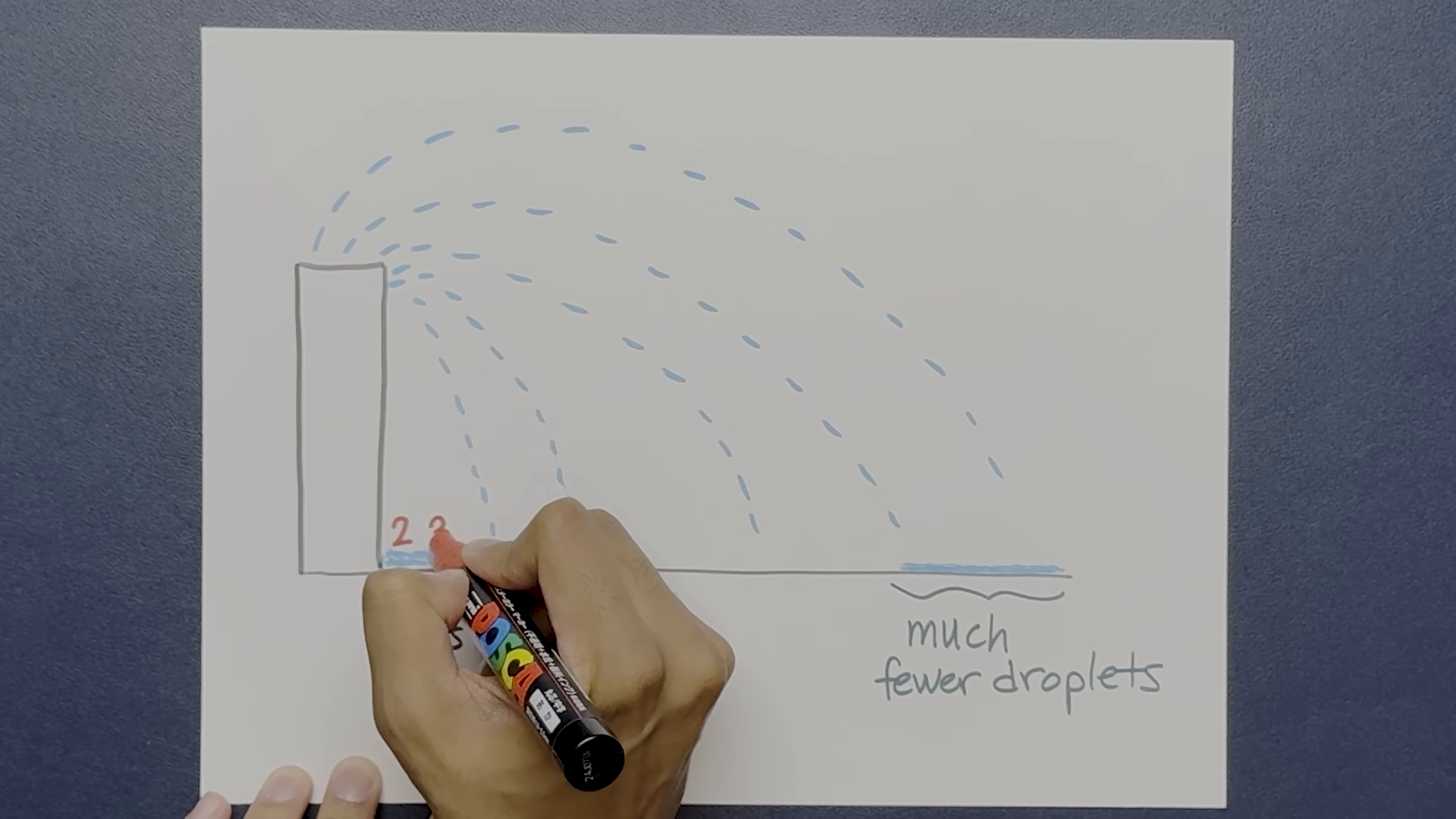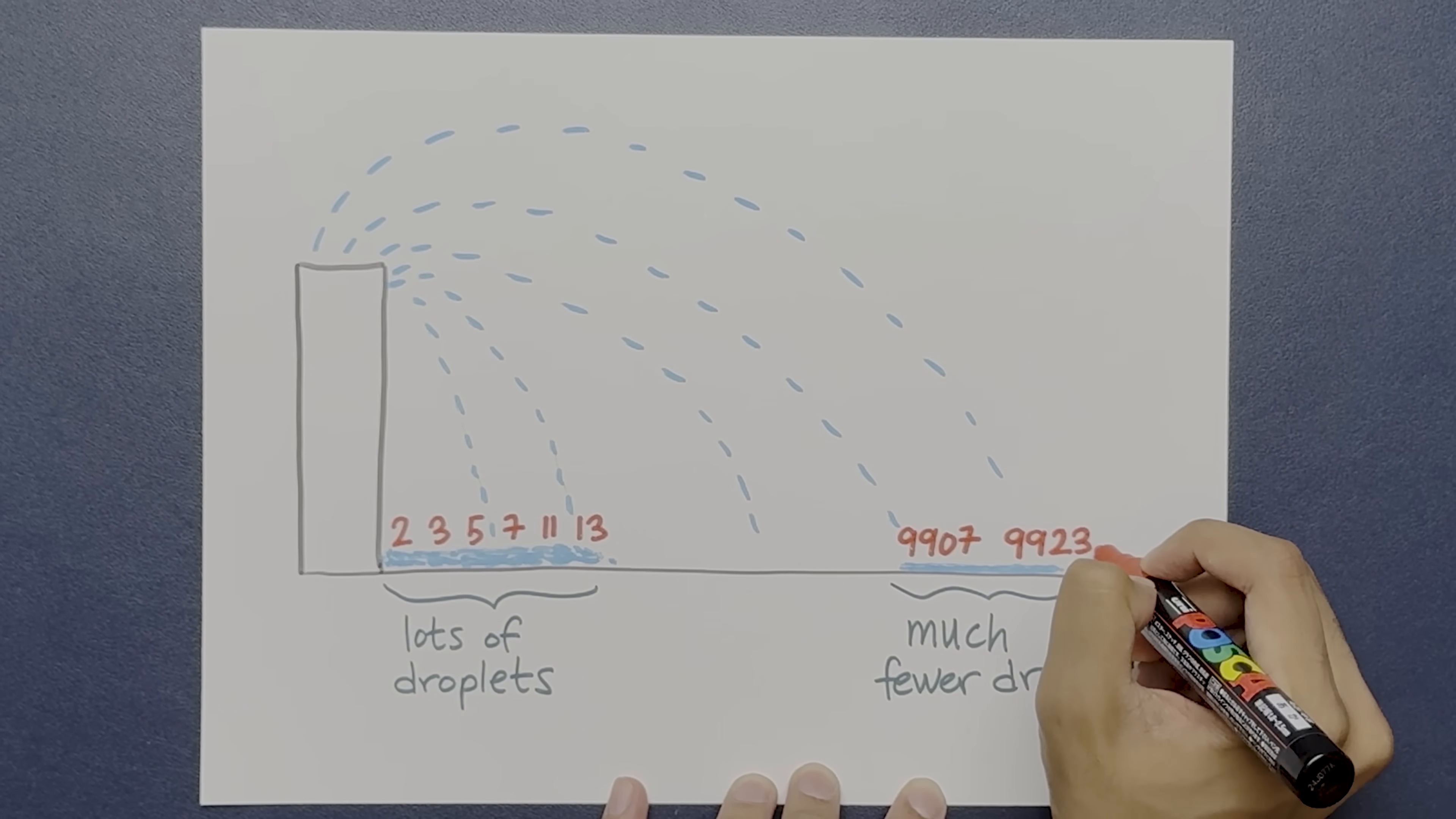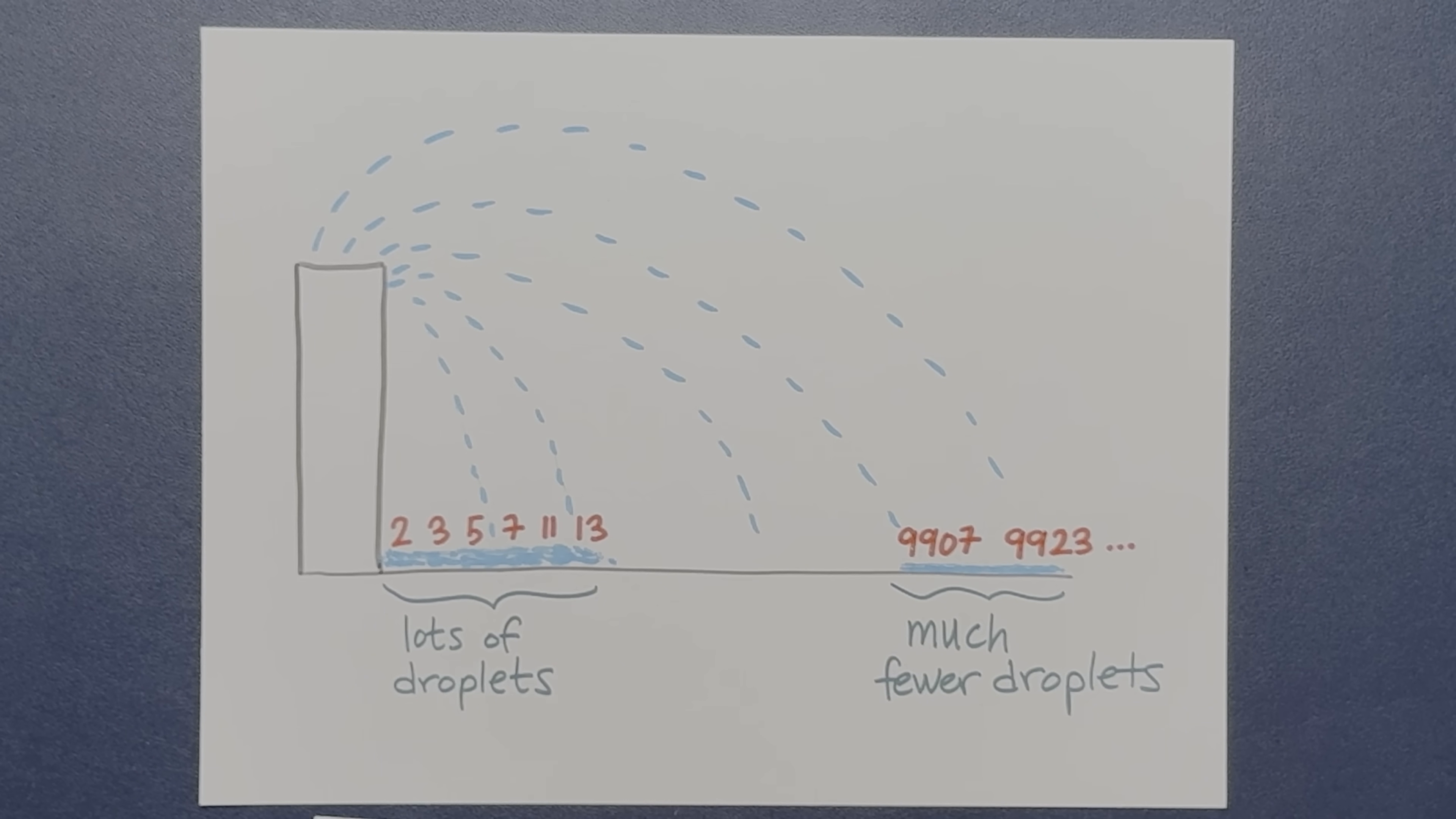This is a good analogy for how the primes are spaced out. Imagine that each droplet represents a prime. When you start off in the number line, there are lots of primes. But as you go out, there are much fewer primes. The relative density of primes in the whole integers becomes smaller and smaller the further you go towards infinity.